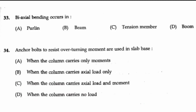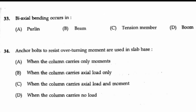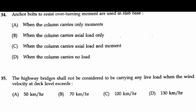Question 33: biaxial bending occurs in — actually it occurs in the purlin. A purlin is a beam supported on trusses, normally designed as a continuous or simply supported beam, and it will have biaxial bending. So option A is the right answer. Question 34: anchor bolts to resist overturning moment are used in slab base when the column carries both axial load and moment. So option C is the right answer.